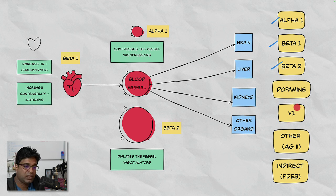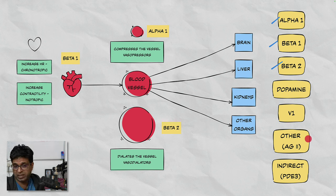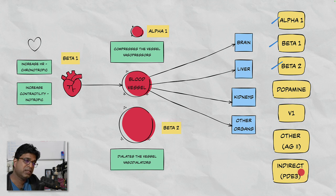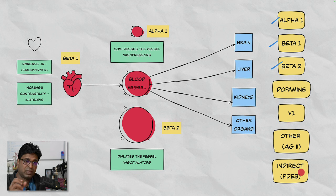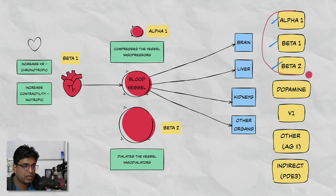Dopamine receptors are present in many places, mainly coronary, cerebral, renal, and mesenteric circulations. At different dosages they affect different systems. Vasopressin receptors are present and cause vasoconstriction — they are potent vasoconstrictors. Other agents include angiotensin-2 receptor agonists, which increase blood pressure via the renin-angiotensin axis. Phosphodiesterase-3 inhibitors increase cyclic GMP and intracellular calcium, increasing contractility of both the heart and blood vessels — an indirect mechanism. We'll be discussing mainly alpha-1, beta-1, beta-2, and dopamine receptors.